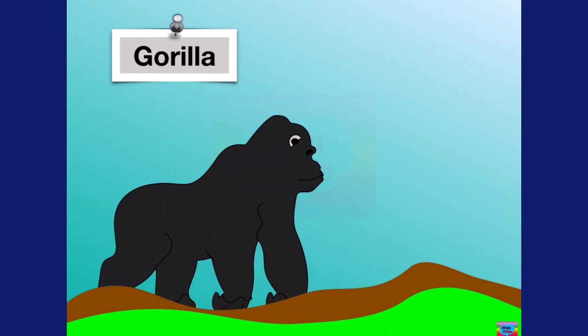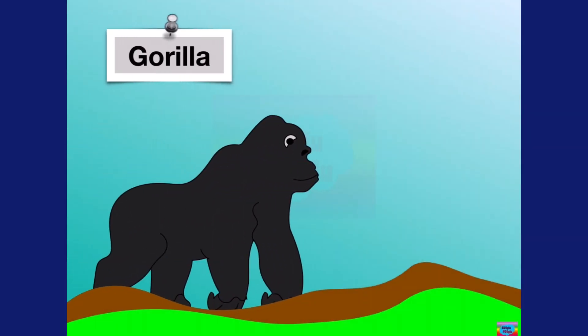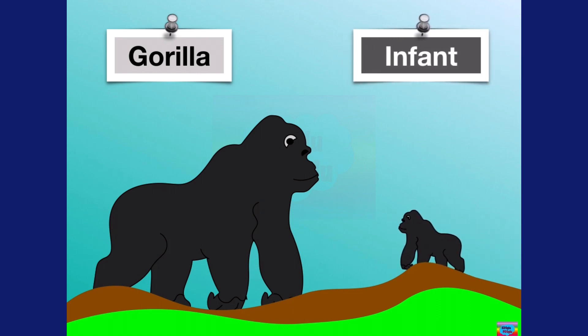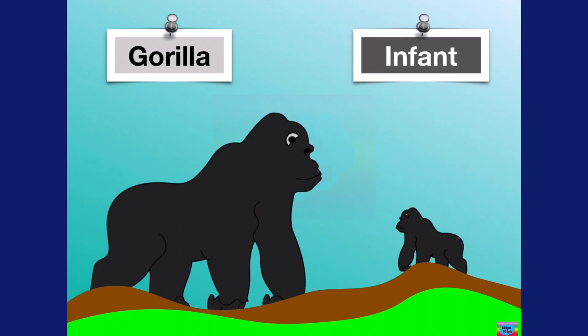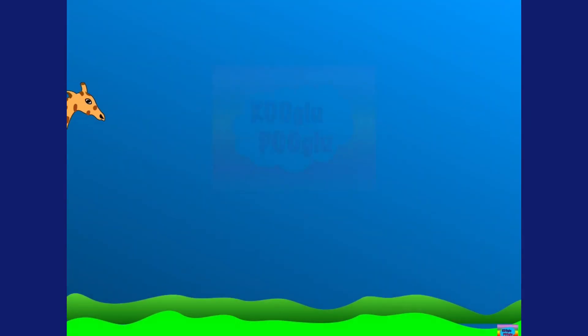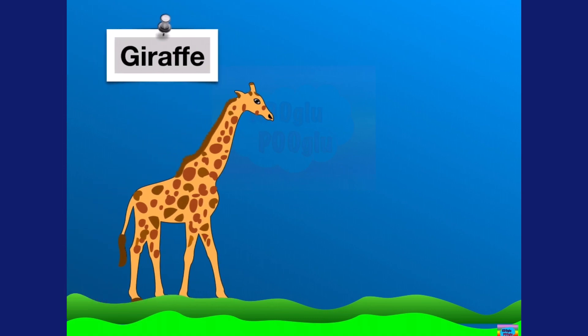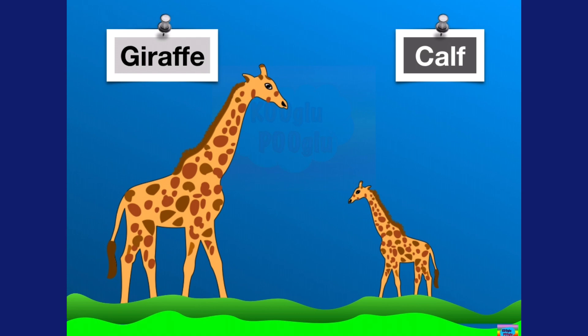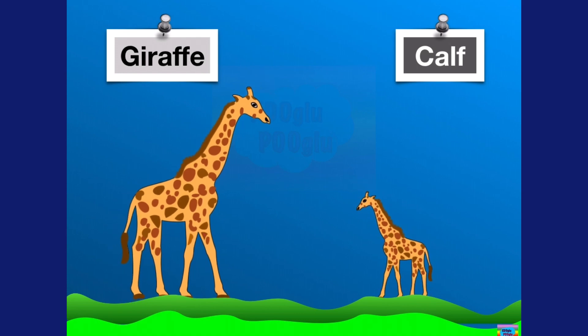Here we have a gorilla, and a baby gorilla is called an infant, just like we call it a baby. Here we have a giraffe, and a baby giraffe is called a calf.